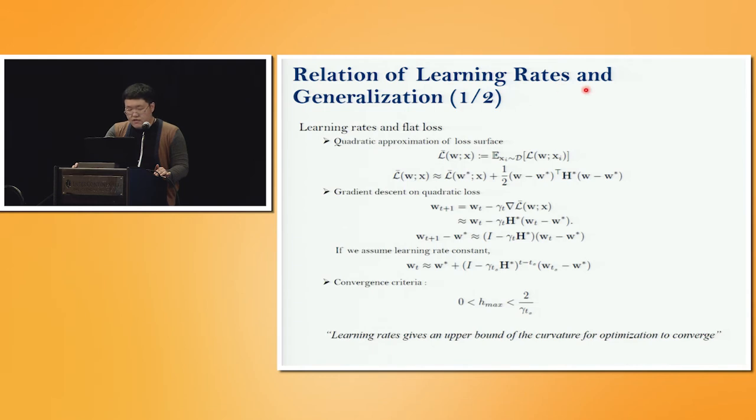We introduce the relation of learning rates and generalization. Let us assume the loss is quadratic form like this. Then gradient descent can be easily calculated as follows. And we can represent this gradient descent process as a series form multiplied by this term.